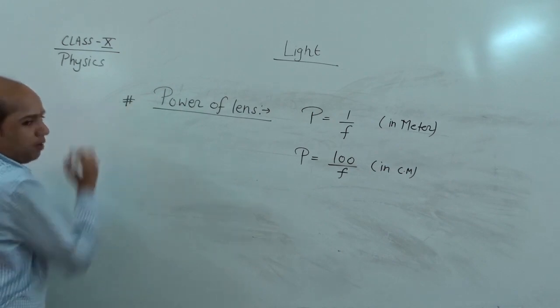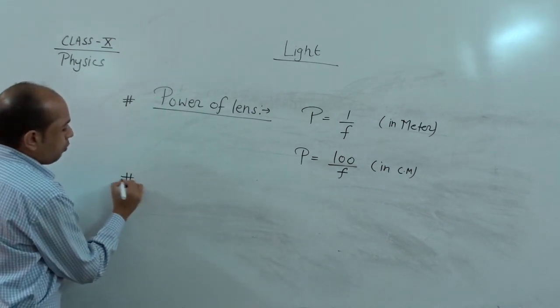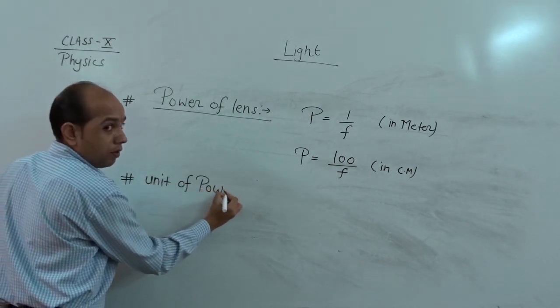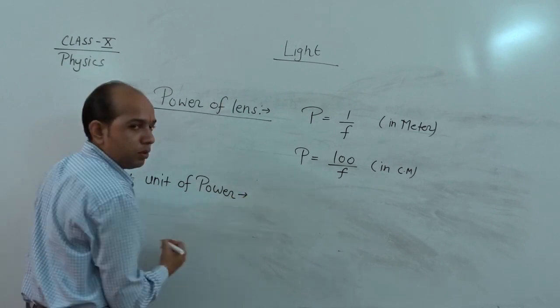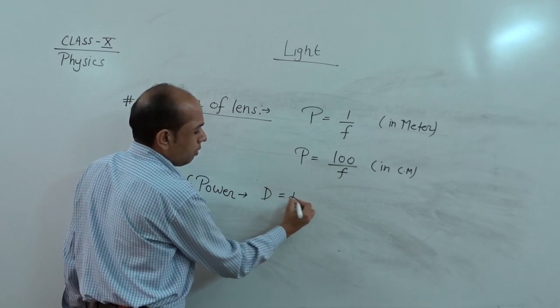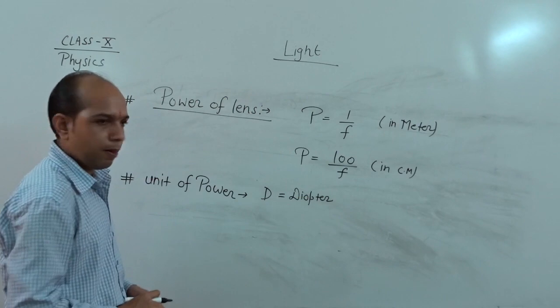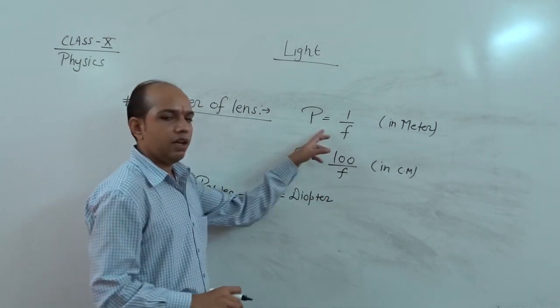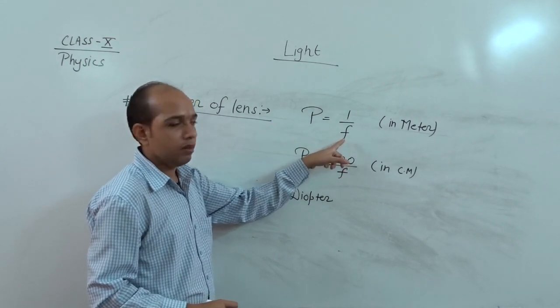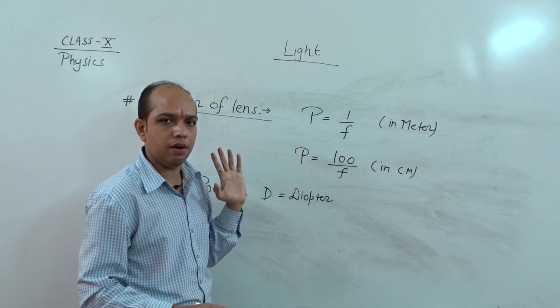So this denotes here power. If we talk about their unit part, unit of power is defined by capital D and this indicate here diopter. So diopter is the unit of power. We can easily define it. Suppose focal length of any lens is one meter, then we can say its power is said to be one diopter.